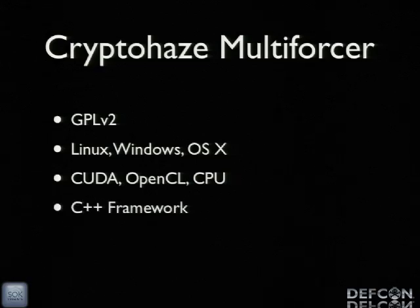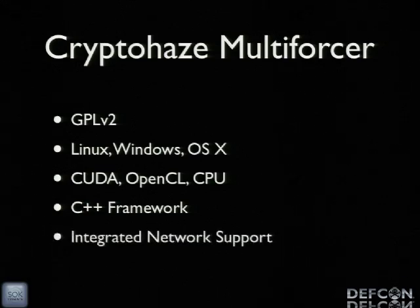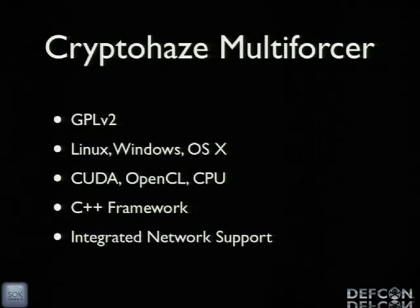It is written as a C++ framework with the goal of easy extendability. To add a new hash type of an existing implemented variety - say just a plain unsalted hash - once you've written your device kernel, there's very little glue code that you have to write on the host side to add it to the framework and begin cracking. And it has integrated network support. Unlike a lot of the other tools where there are third-party wrappers, my network support is built in, fully integrated with the tools, and it lets you use a whole lot of systems at once.